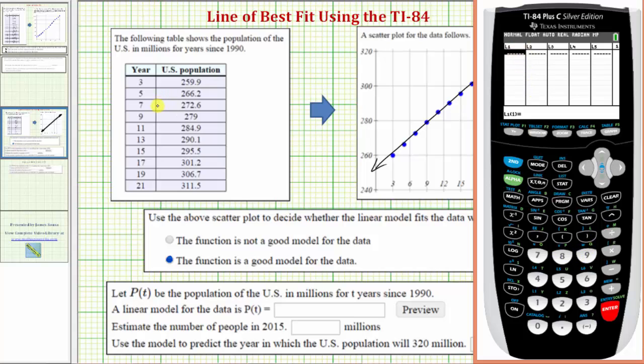So we have 3, enter, 5, enter, 7, enter, and so on. Arrow to the right and now enter the U.S. population in millions: 259.9, enter, 266.2, enter, and so on. It's a good idea to check all the values twice, because if we enter one value incorrectly, the linear model will be incorrect. Everything looks good here.